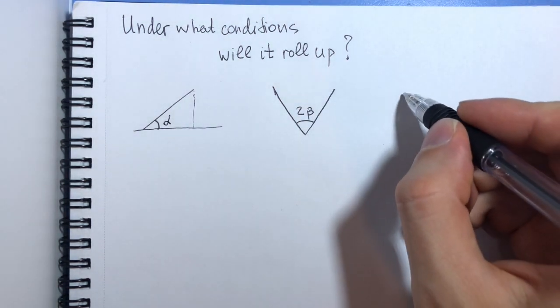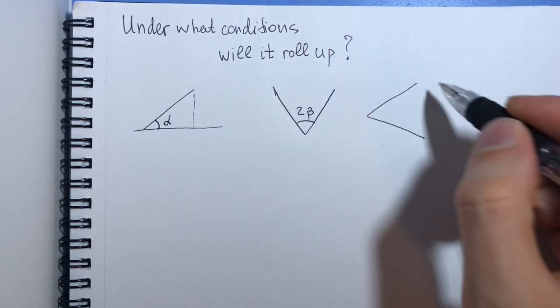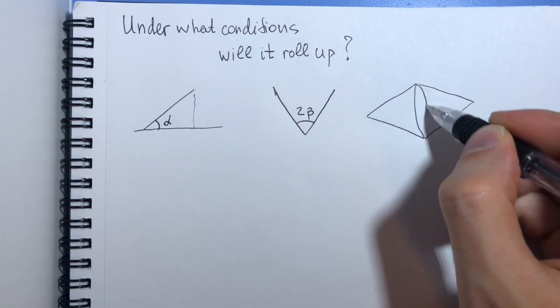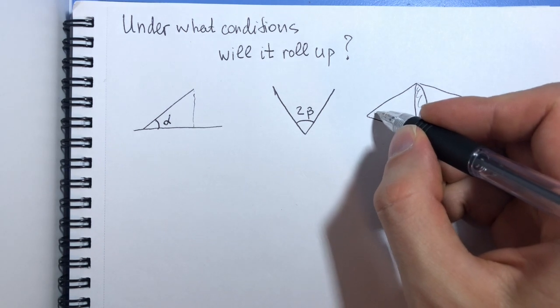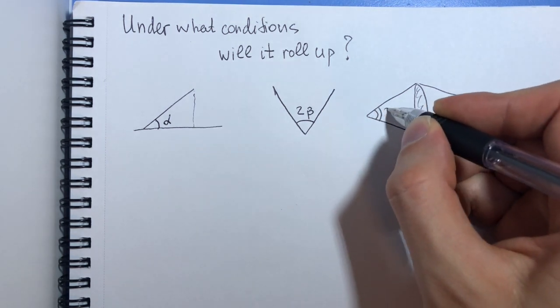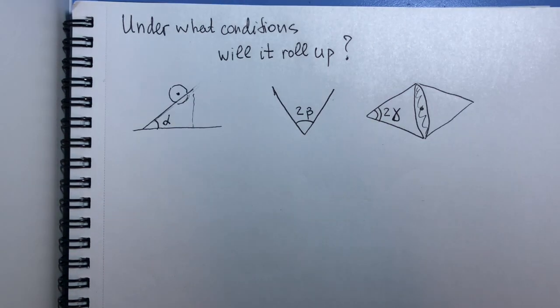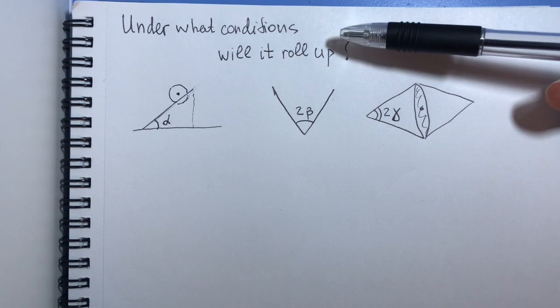And now we also have a cone, double cone itself. Looks something like that. And for our calculations, we will be interested in this angle. Let's call it 2 gamma.